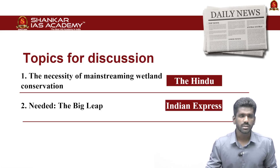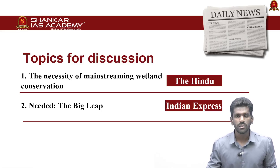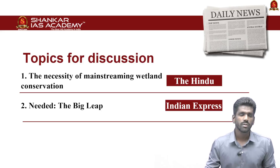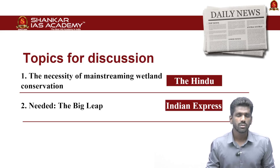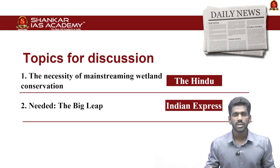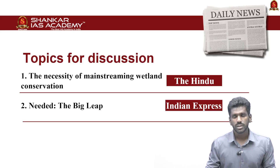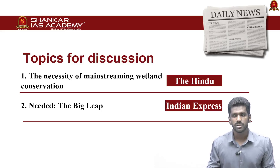The first article is about wetland conservation — the significance and challenges in wetland conservation. This article is taken from the Hindu newspaper. The second article is about the AI revolution — what India should do to lead the AI world and dominate AI infrastructure. This article is taken from the Indian Express newspaper. Now, let us get into the discussion.